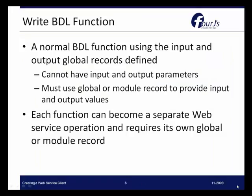The next thing to do is to write the BDL function. It's a normal BDL function using the input and output global records that you have defined. You cannot have input and output parameters — you have to use a global or module record to provide input and output values; it can't be localized to the function. Each function can become a separate web service operation and requires its own global or modular record.